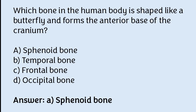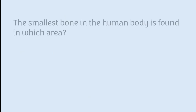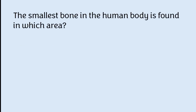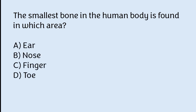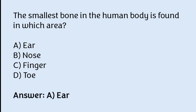The smallest bone in the human body is found in which area? Ear, nose, finger, or toe. The correct answer is option A — the smallest bone in the human body is found in the ear.